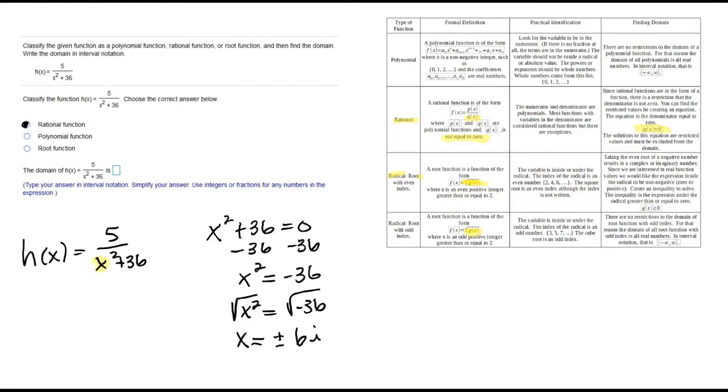So because our solutions came out to be i, we don't have any real numbers to exclude. Since we don't have any real numbers to exclude, the domain is negative infinity to infinity.